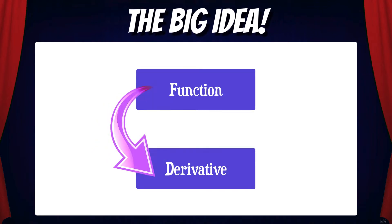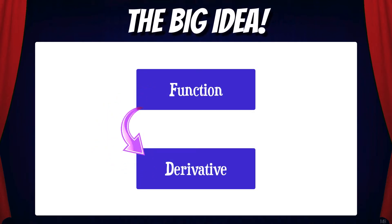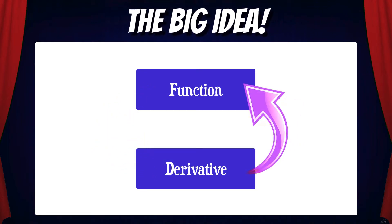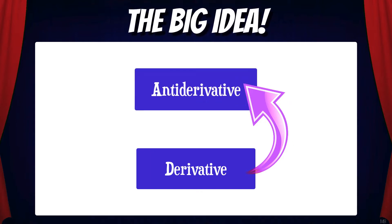Here's the big idea. Throughout this course, we've been finding derivatives of functions. But what if we start with a derivative and try to find the original function that it came from? When we do this, the original function is called an antiderivative.